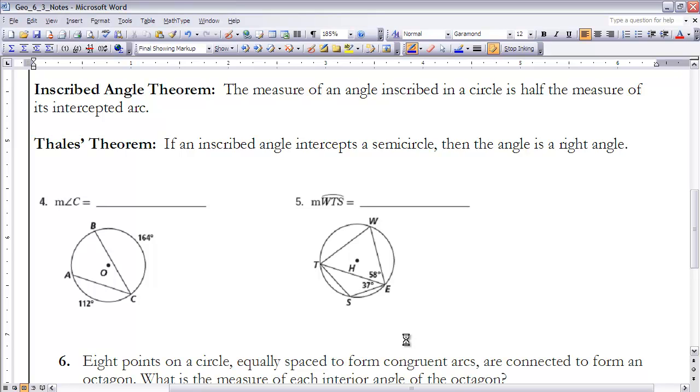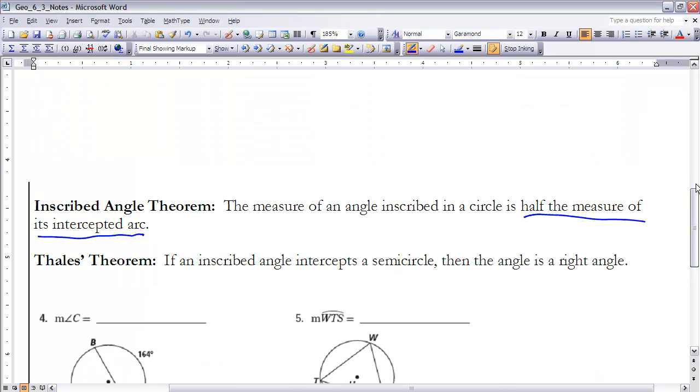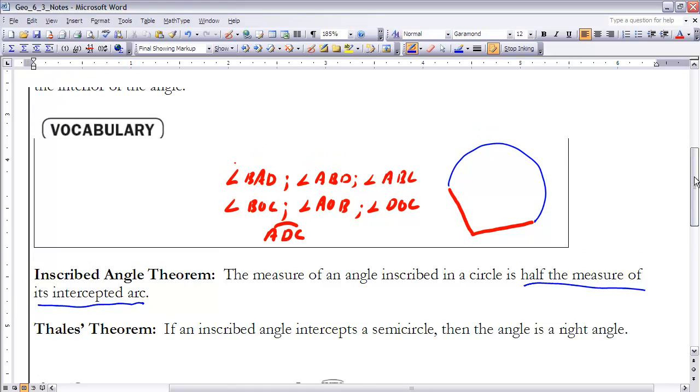Now that we've established what an inscribed angle is, we want to find out what's unique about it. What really describes the uniqueness of the inscribed angle is the inscribed angle theorem. It says the measure of an angle inscribed in a circle is half the measure of its intercepted arc. What that means is that any time I'm looking at an intercepted arc, the measure of that arc will be twice the measure of the angle, or you can also say the measure of the angle will be half the measure of the arc.